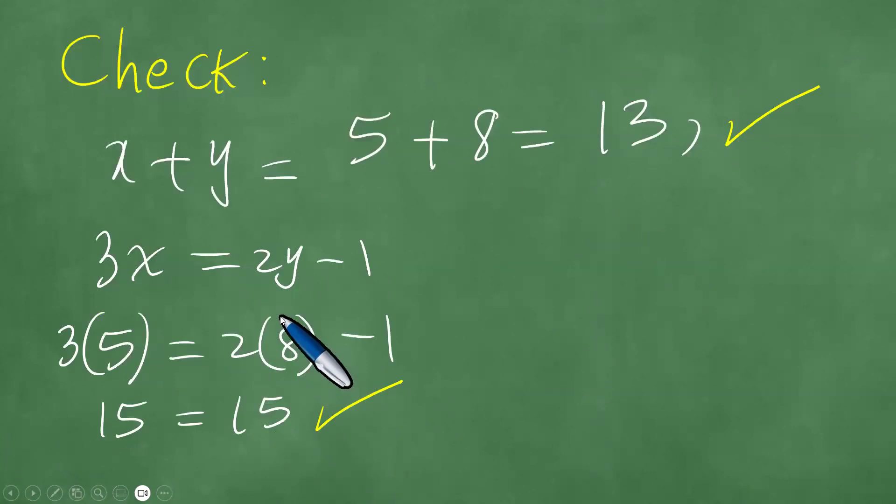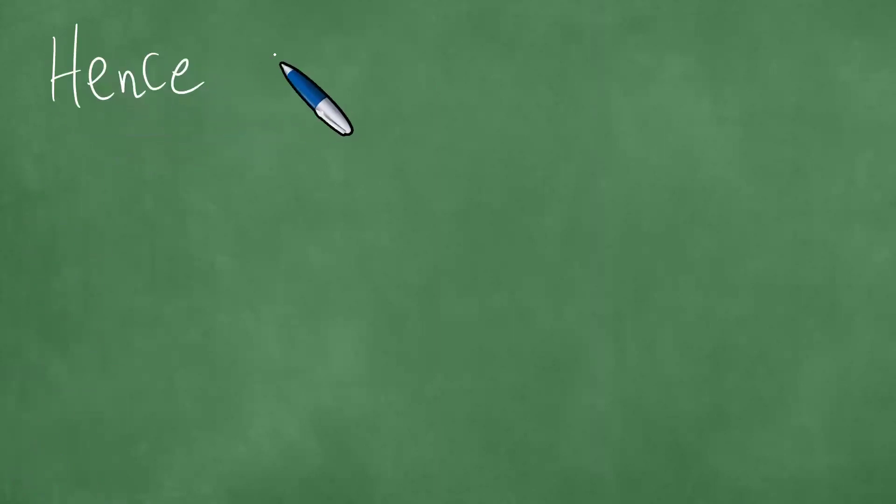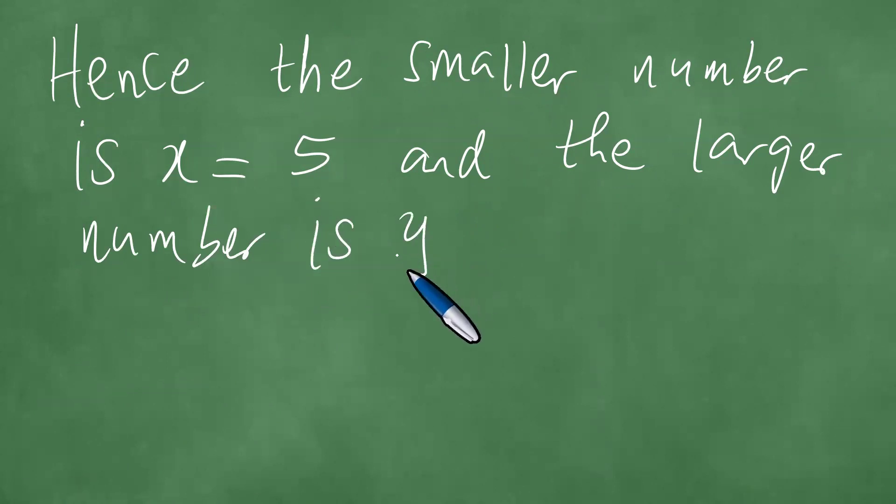And so now we can conclude. Hence, the smaller number is x equals 5 and the larger number is y equals 8.